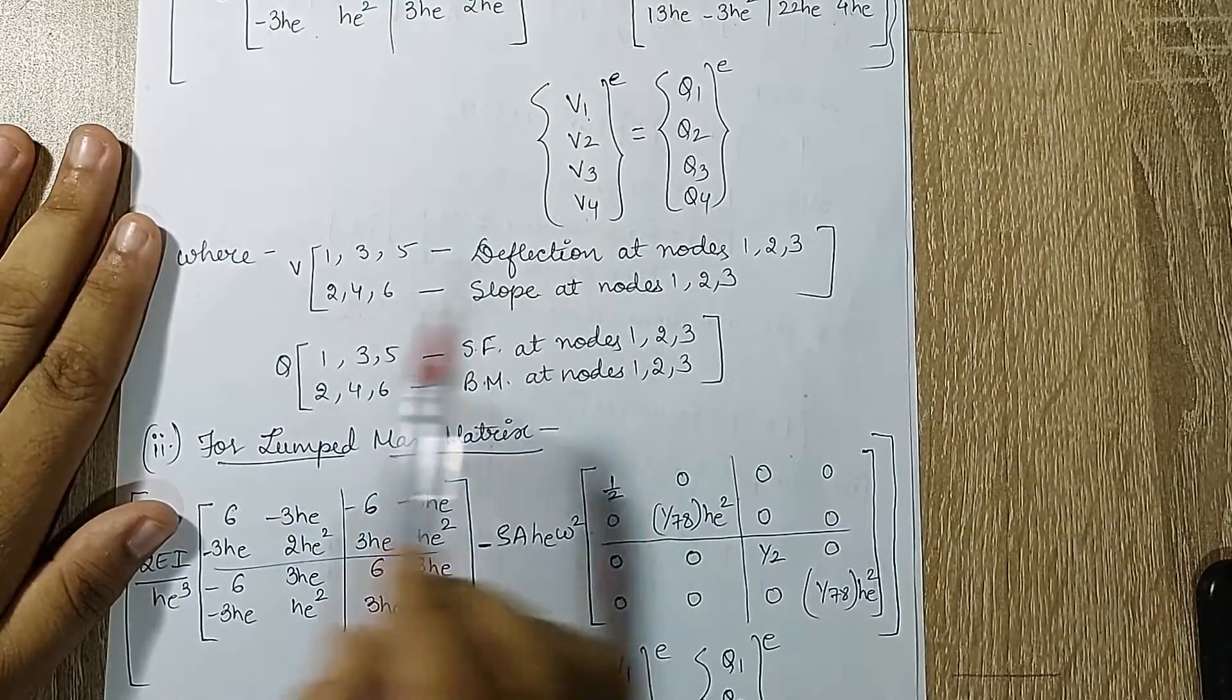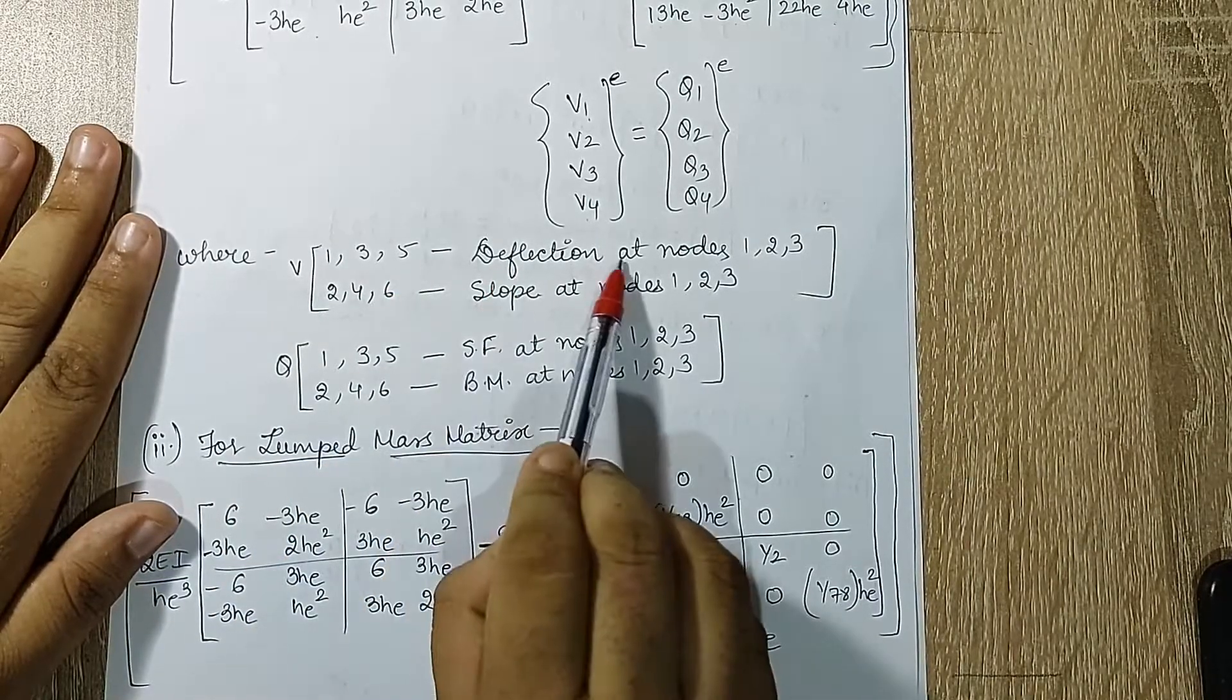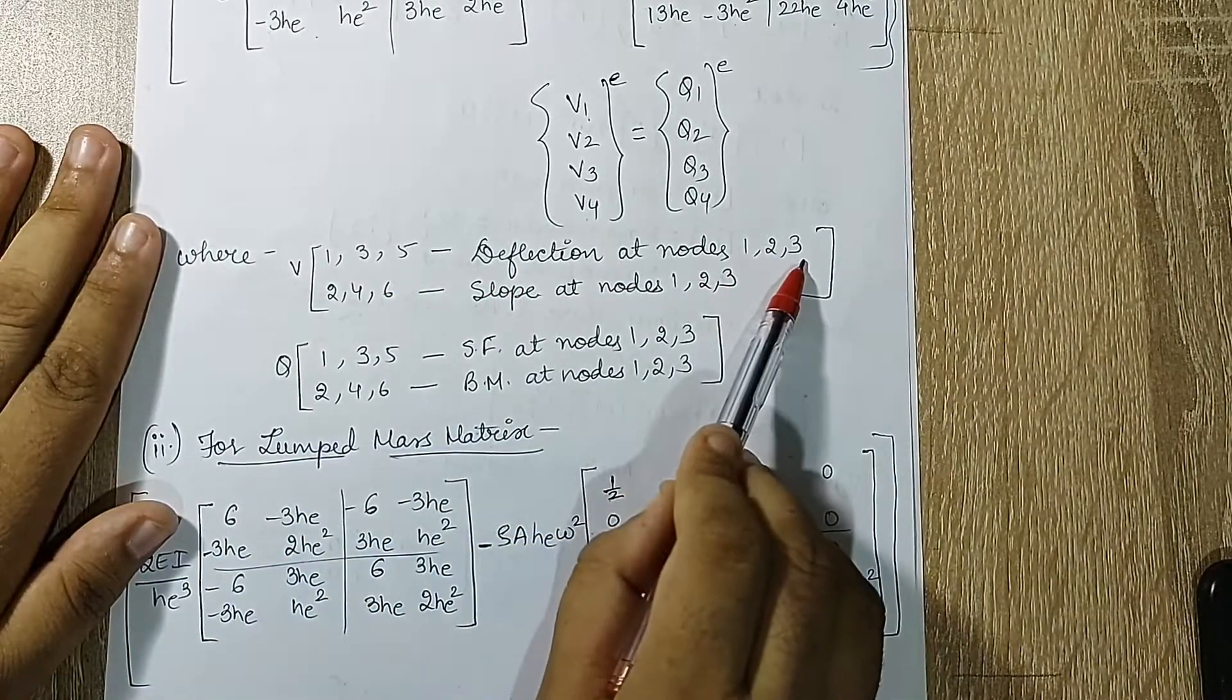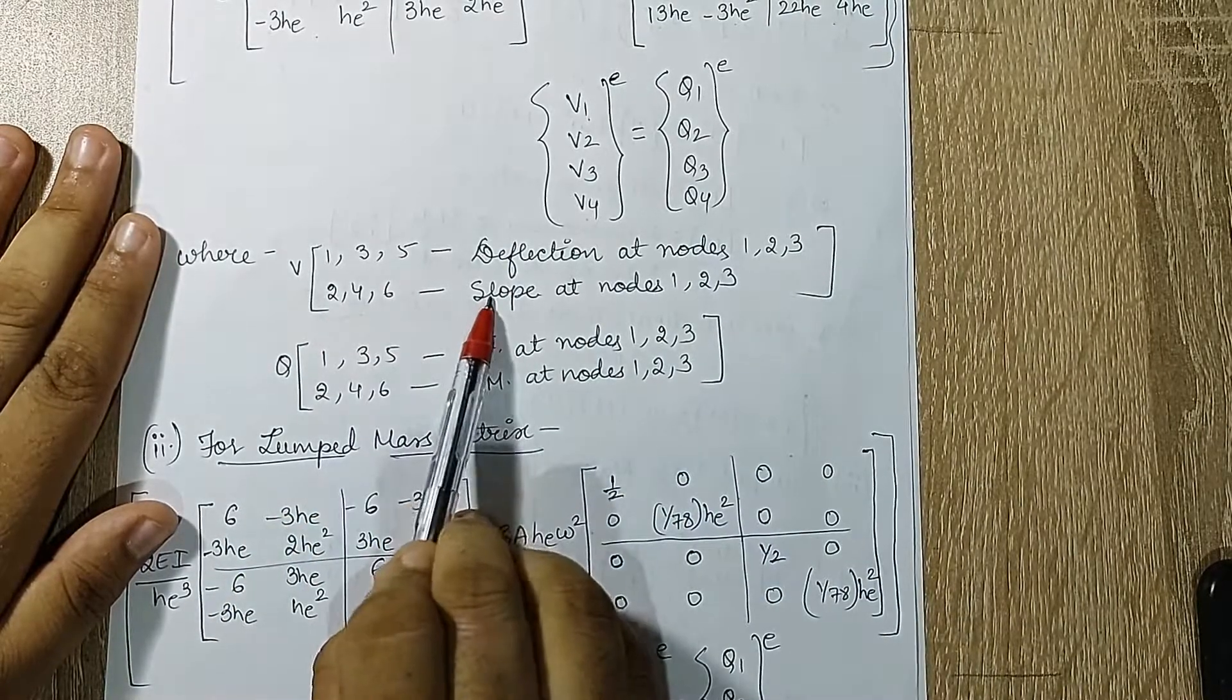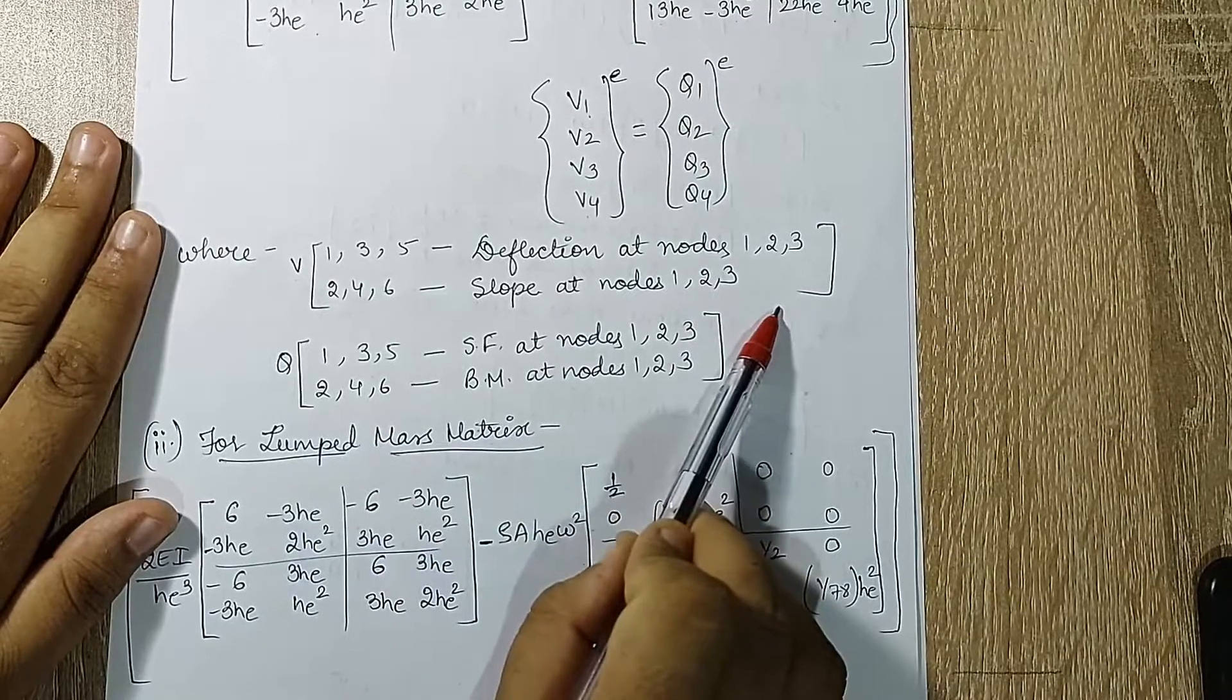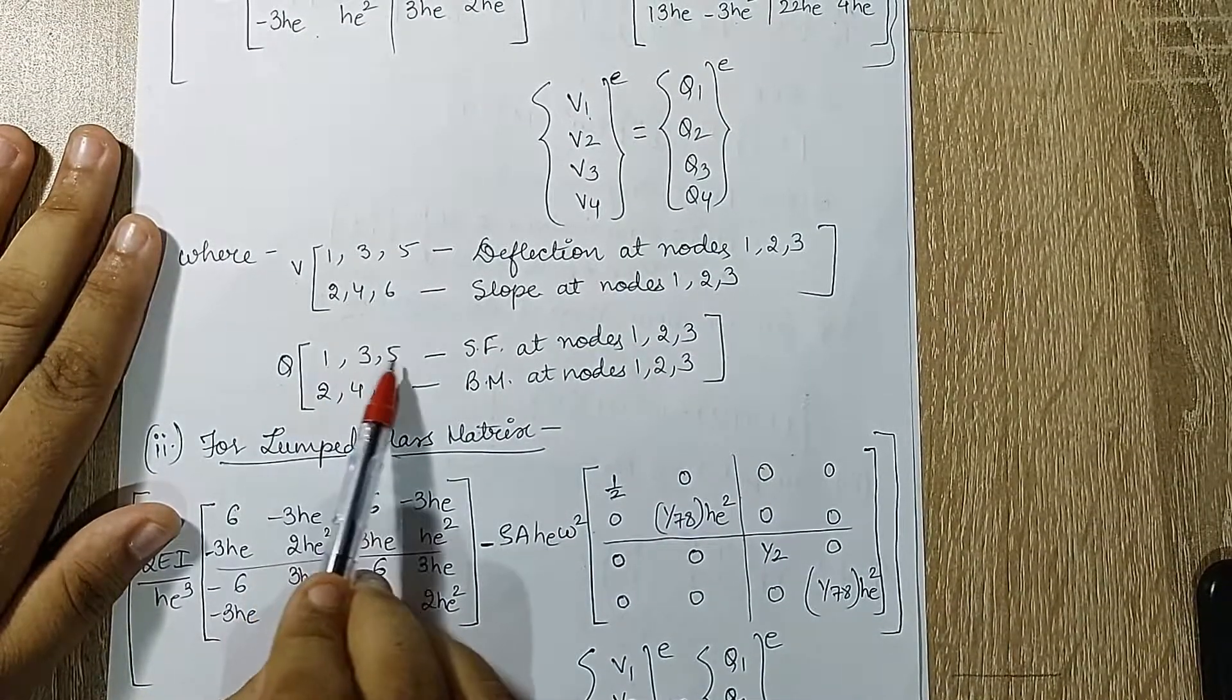So here we are using v. So 1, 3, 5 indicates deflection at nodes 1, 2, 3, and v2, v4, v6 are indicating slope at node 1, 2, 3 respectively.